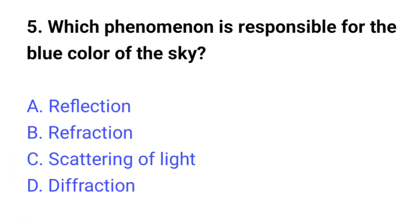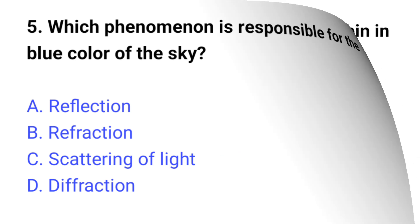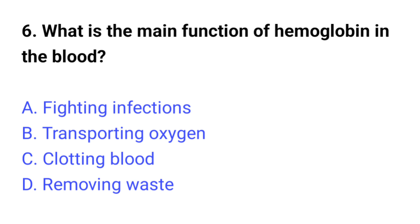Question number five: which phenomenon is responsible for the blue color of the sky? The right answer is option C, scattering of light. Question number six: what is the main function of hemoglobin in the blood? The right answer is option B, transporting oxygen.